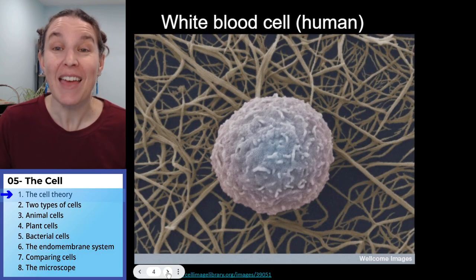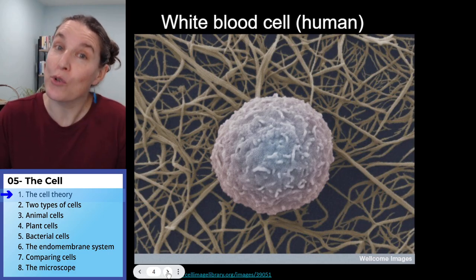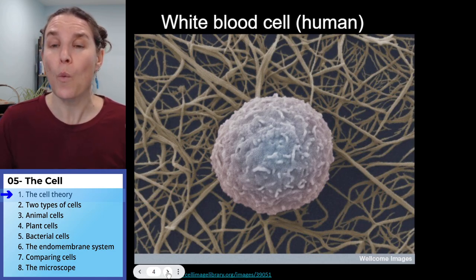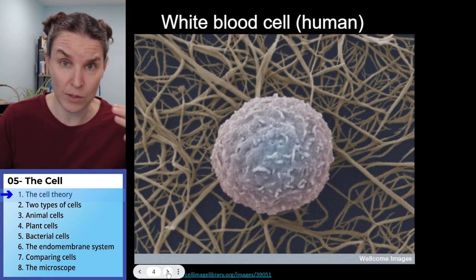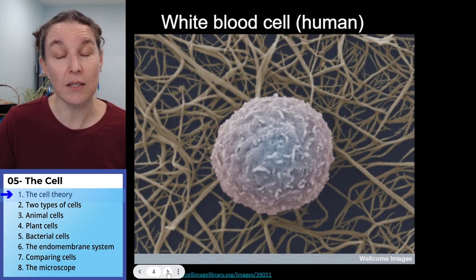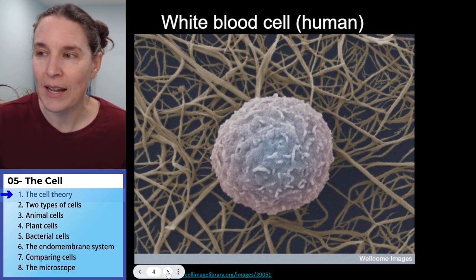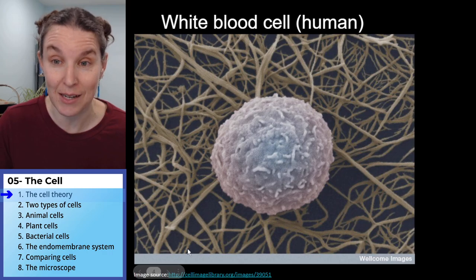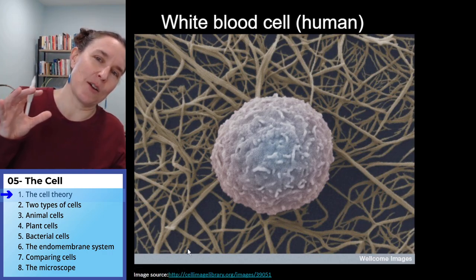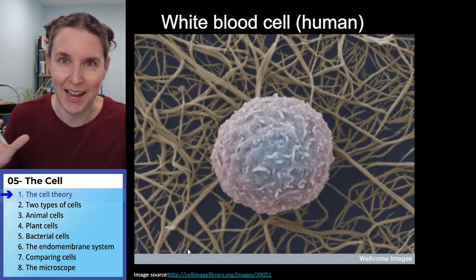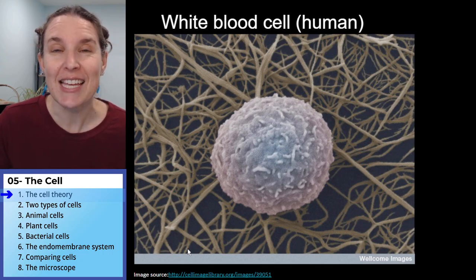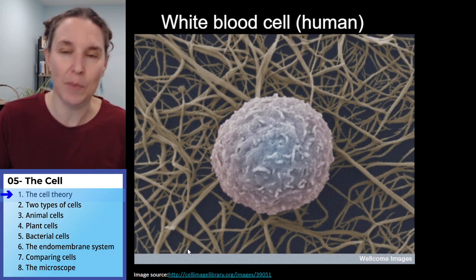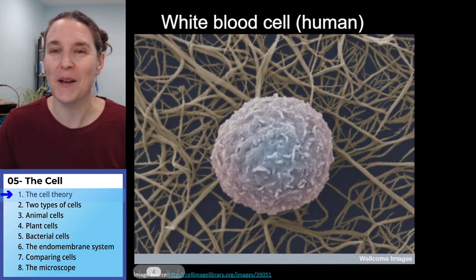White blood cells don't carry oxygen around — they use the oxygen and produce carbon dioxide. But they are our immune system. You've probably been hearing a lot about white blood cells and T cells and different immune cells in our bodies. And this is one of them. The other cool thing is you might look at this and wonder what that white blood cell is sitting on. It's sitting on the fibers that form blood clots — the fibrin proteins in a blood clot. This little white blood cell got caught up in a blood clot.